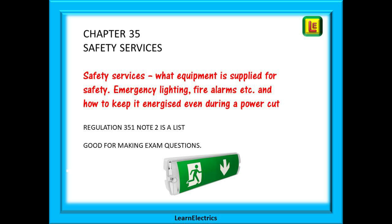Chapter 35 looks at safety services. What equipment is supplied for safety? Emergency lighting, fire alarms, etc. And how to keep it energised during a power cut. At first glance, it doesn't look like there's a list here. But there is. And you may be asked questions on this list. Note 2 of Regulation 351 is the list. It is written as a sentence. But it is still a list. Make sure you can find it.